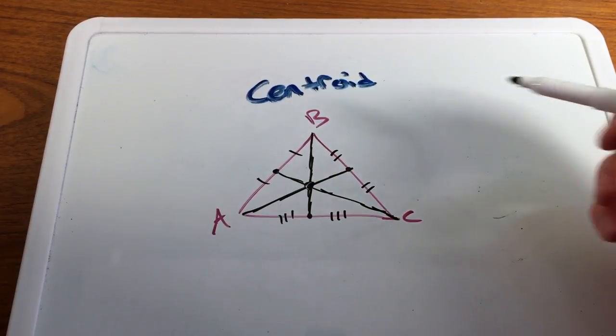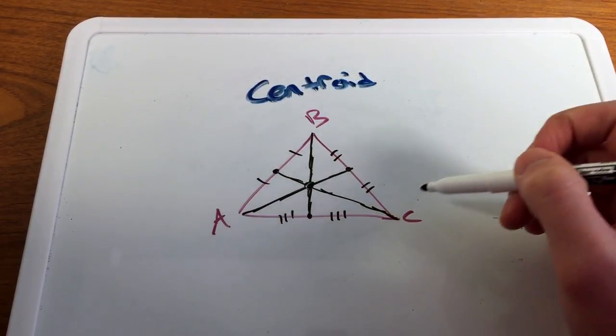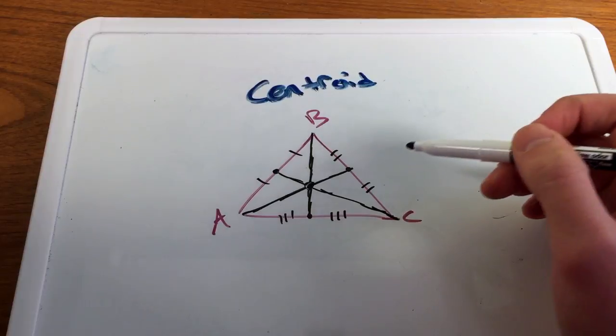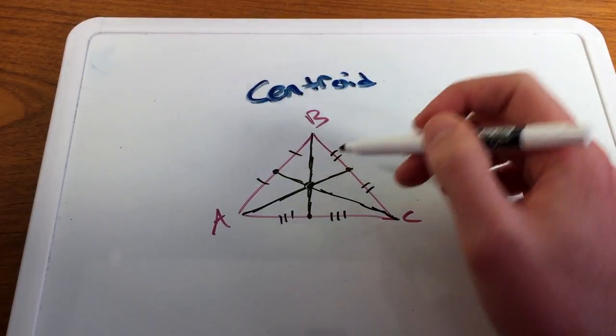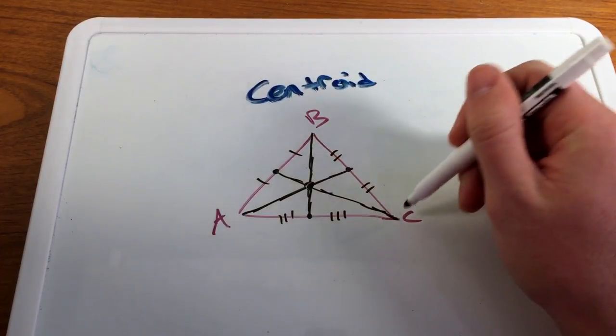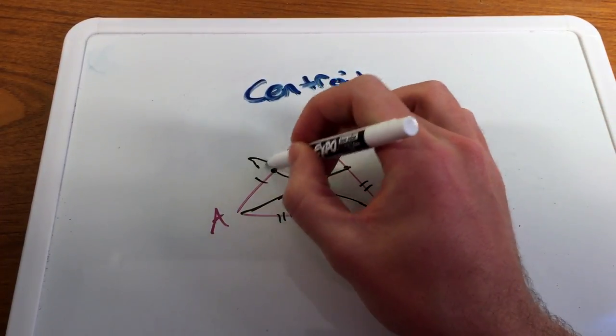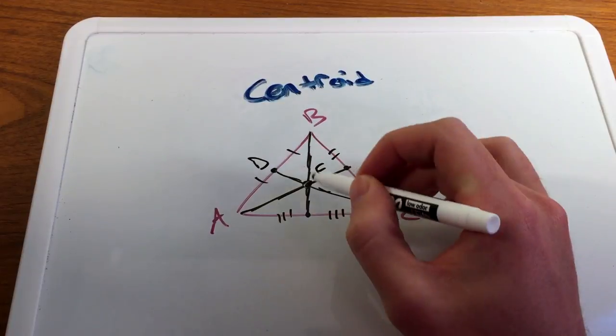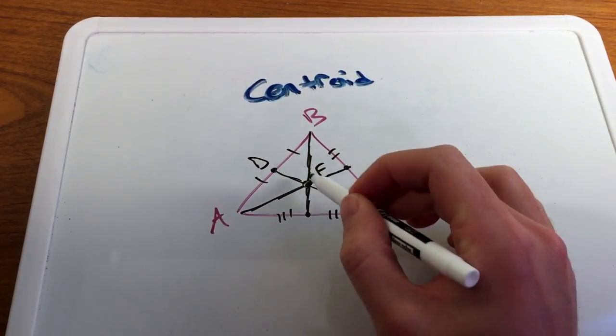Now there's a few properties about this centroid itself, the point of concurrency here of the three medians of a triangle, and that is the length itself. So if I put some, I'll just pick one of them here, we have point C, and let's call this D, and let's call this point F here, let's call this centroid point F, right here in the middle.